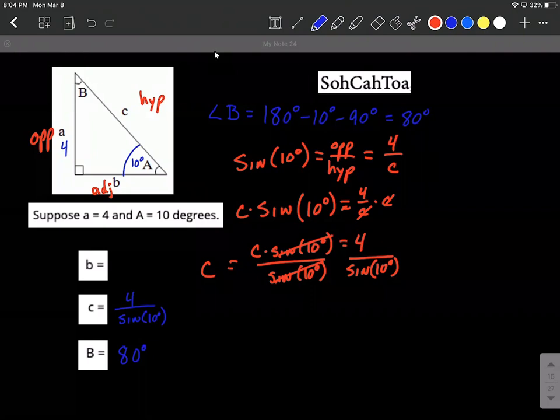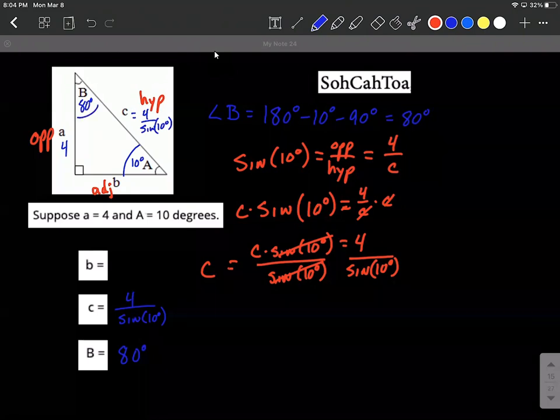Lastly, what we want to do is we want to find B. We could go ahead and fill in this is 4 divided by sine of 10 degrees, and this was 80 degrees. To get B, we could use the Pythagorean theorem, but that sine of 10 degrees is going to be kind of a mess when you're plugging it into the Pythagorean theorem and trying to solve down. So instead, I may choose tangent.